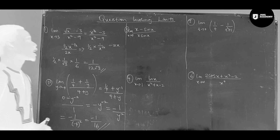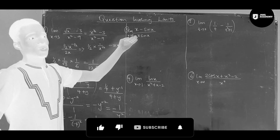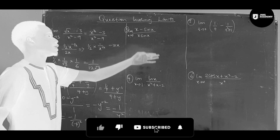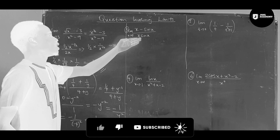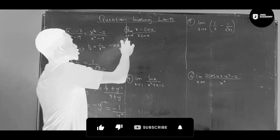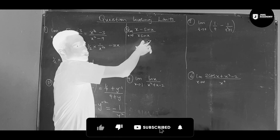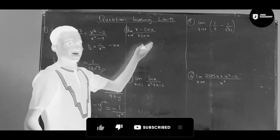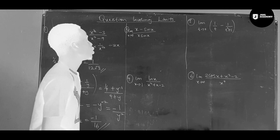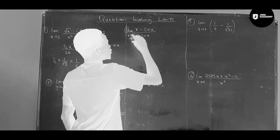Let's look at the third question. The limit as x tends to zero of x minus sin x over x times sin x. Now you can see if we substitute zero, x times sin x will give us zero, and sin zero equals zero. So we have an indeterminate form and I'm going to use L'Hôpital's rule to differentiate.